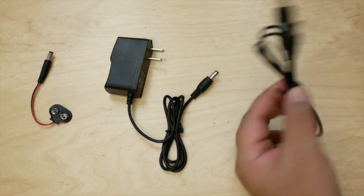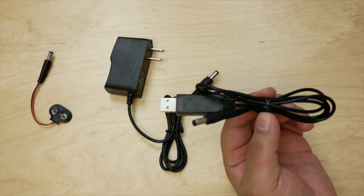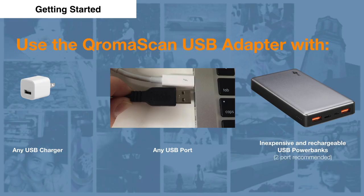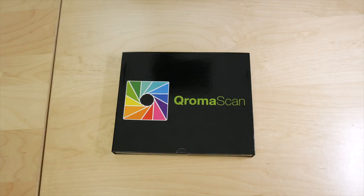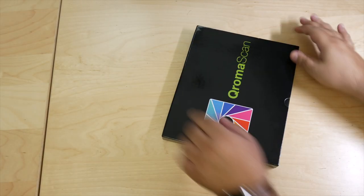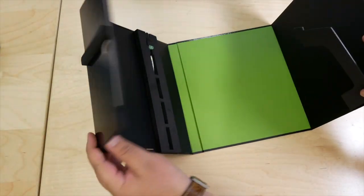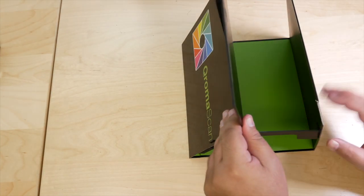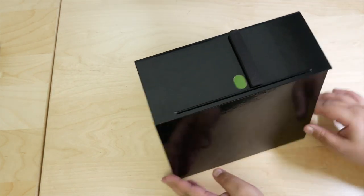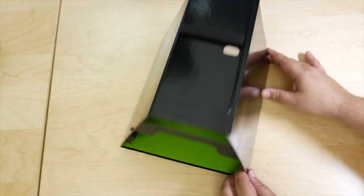Finally, the most versatile way to power the lightbox is to use the ChromaScan USB adapter, which allows you to use any USB outlet as a power source. You can use your iPhone charger, a port on your computer, or my favorite — a rechargeable USB power bank. Let's put together the ChromaScan lightbox. Take it out of the box and rotate it so the spine is on your left, then grab the brace arm and guide it right into the slot. Next, guide the top flap down into position. When done, everything should be lined up.